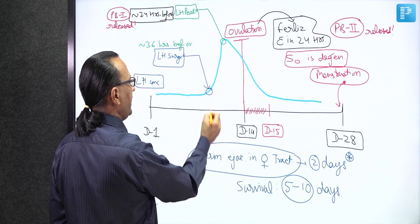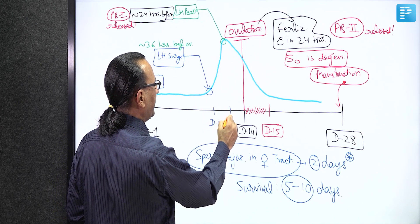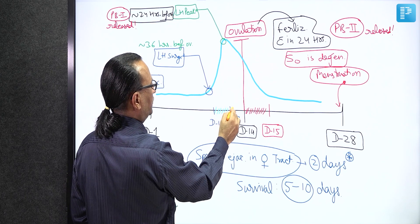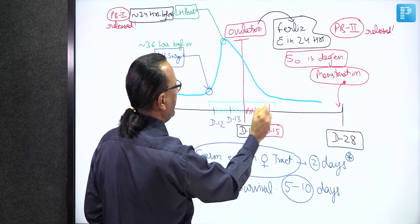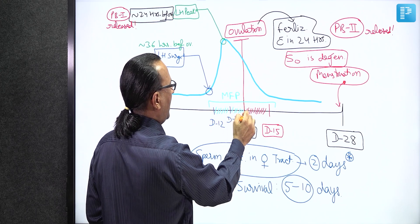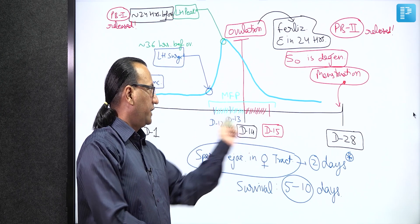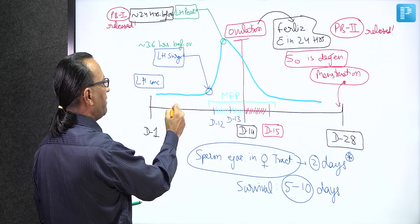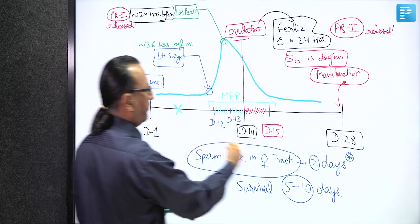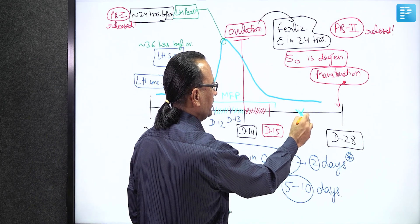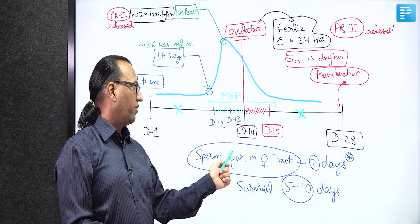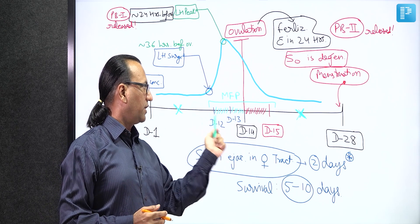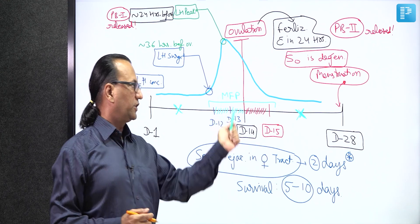So if the sperm was ejaculated on day 12, day 13, or day 14, there is a chance of fertilization. The most fertile period is around the day of ovulation — three days in total. If sperm were ejaculated before day 12 or after day 14, fertilization cannot occur. Despite this precise calculation, fertilization is not guaranteed, but these three days are the most fertile period to suggest to the patient.